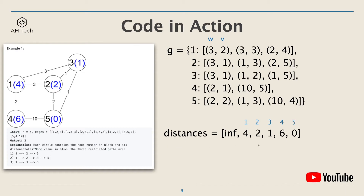We compute the distance array using the Dijkstra algorithm, and the distance array is [4, 2, 1, 6, 0]. This means the shortest distance from node 1 to node 5 is 4, and the shortest distance from node 2 to node 5 is 2, and so on.